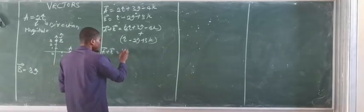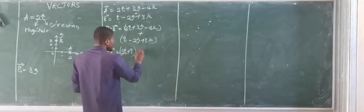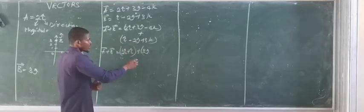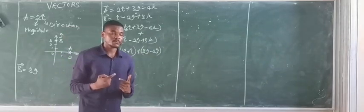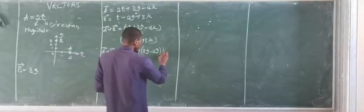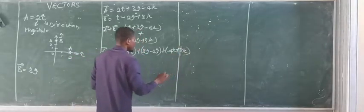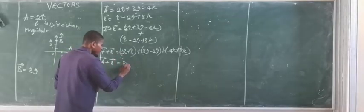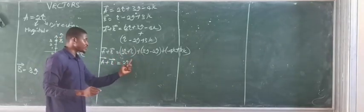So carrying out this addition: I have 2I plus I, because I and I are in the same direction. Then I have plus 3J minus 2J — note that the minus sign belongs to 2, so the two J terms can add or subtract since they are in the same direction. Finally, I have minus 4K plus 3K, which gives minus 4K plus 3K.